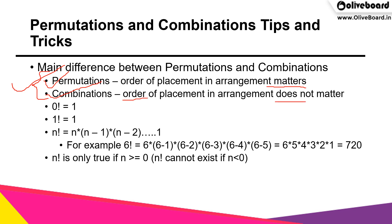Moving on to some properties about permutations and combinations. Zero factorial is one, one factorial is of course one, and n factorial is equal to n × (n-1) × (n-2) all the way until we reach 1.